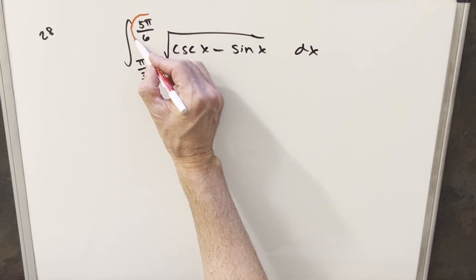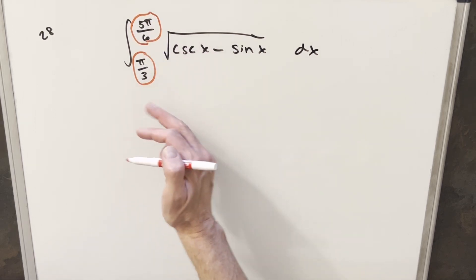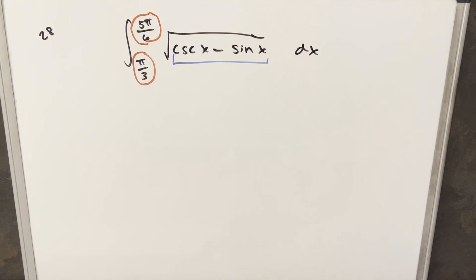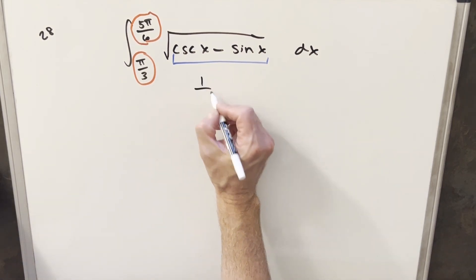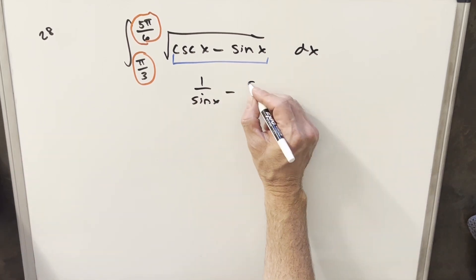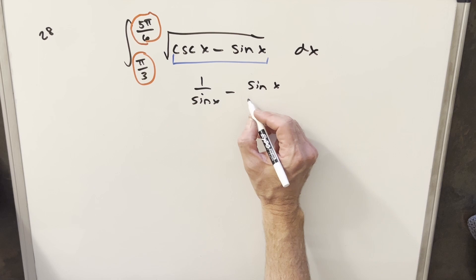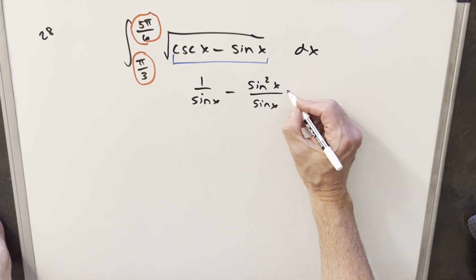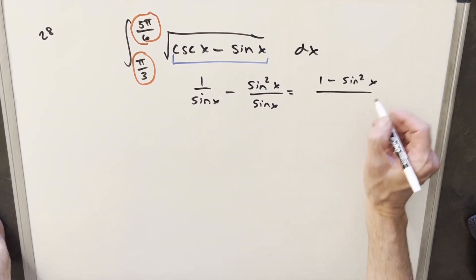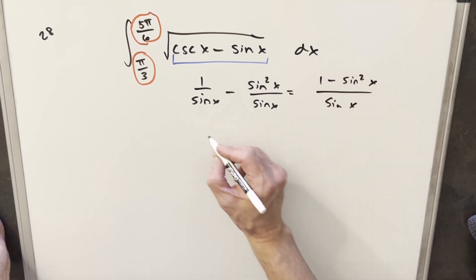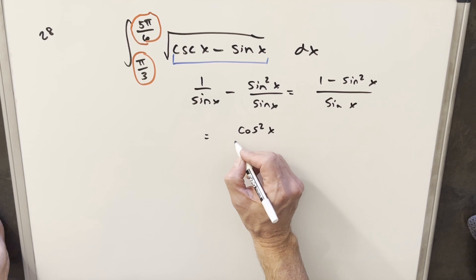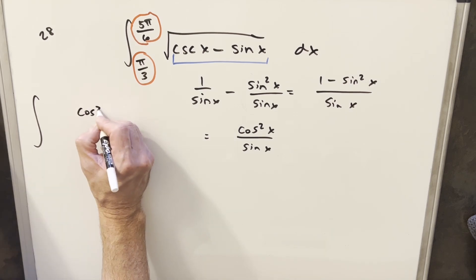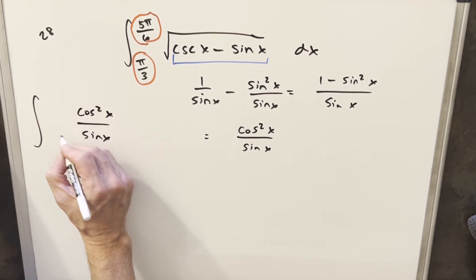The real difference here is we have these bounds, and they were strategically created to make it a little tricky. What I'm going to do to start is manipulate the cosecant and sine and write everything just in terms of sine. So I'll write cosecant x as 1 over sine x, then subtract sine x. Getting a common denominator by multiplying top and bottom by sine x, we get 1 minus sine squared x over sine x, which equals cosine squared x over sine x. Now we put this back into our integral under one radical.